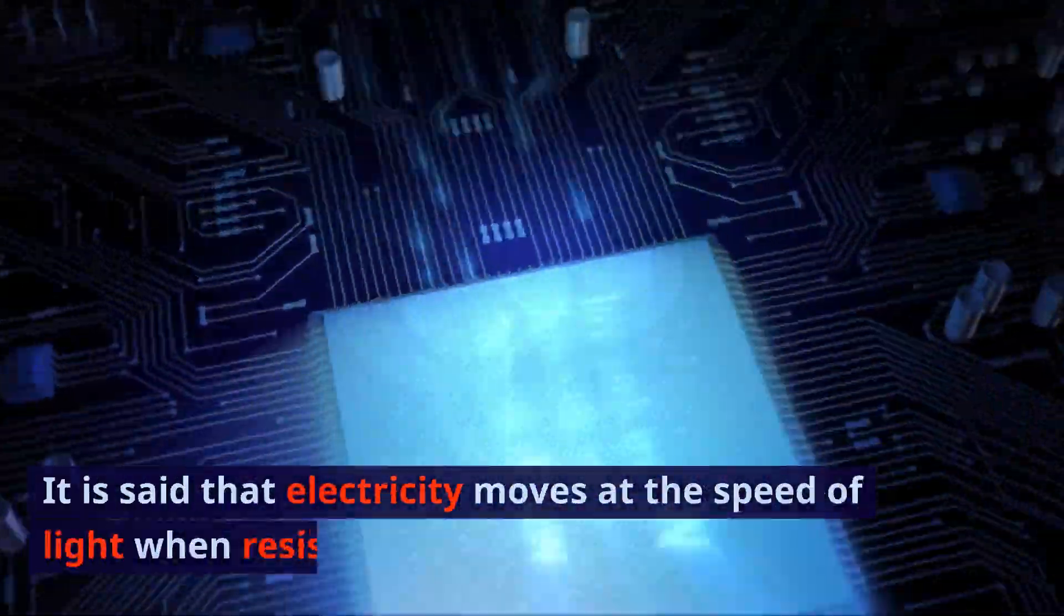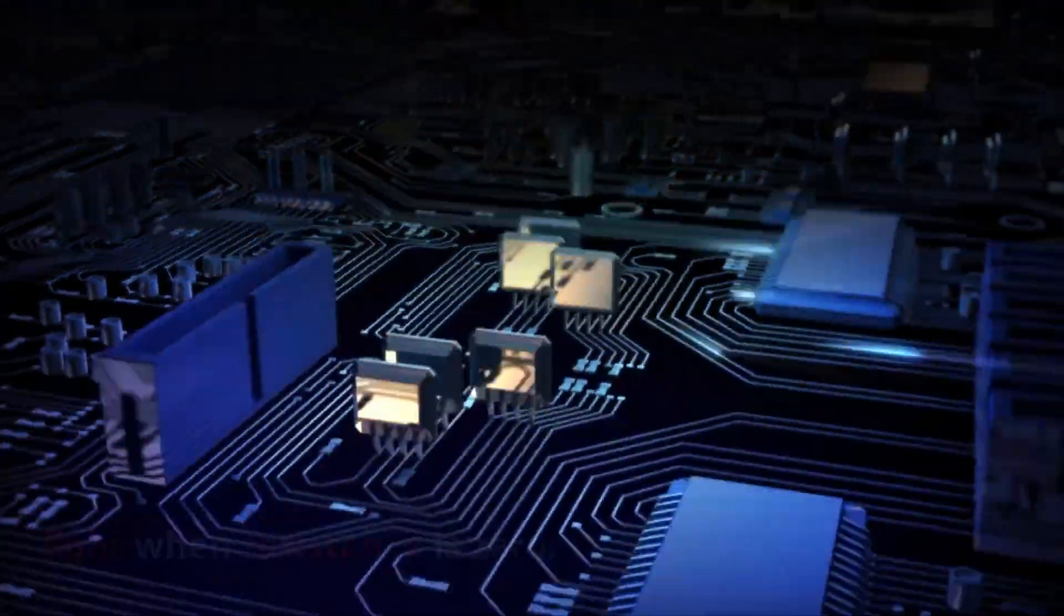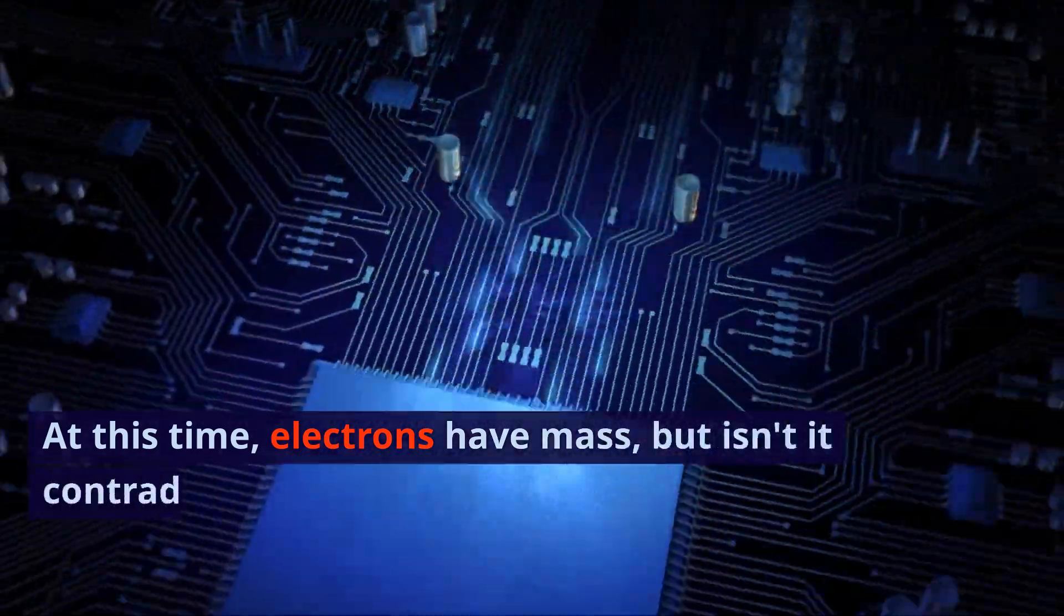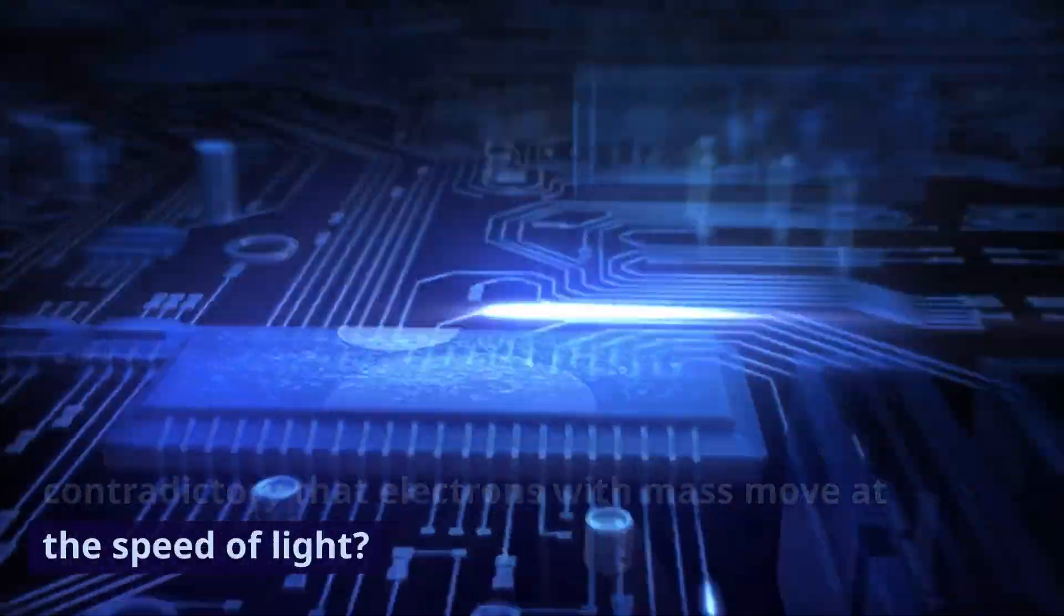It is said that electricity moves at the speed of light when resistance is zero. At this time, electrons have mass, but isn't it contradictory that electrons with mass move at the speed of light?